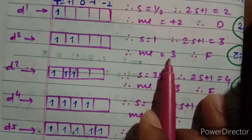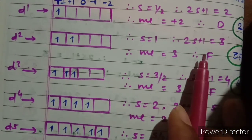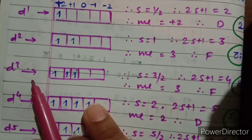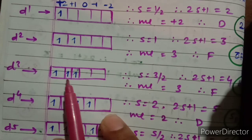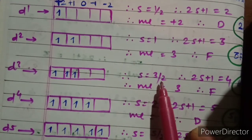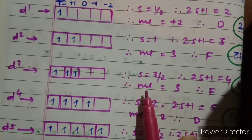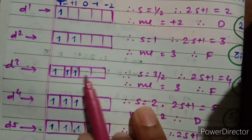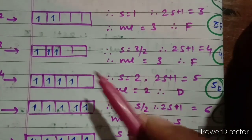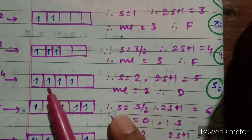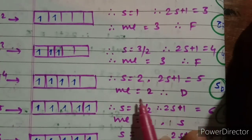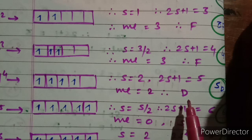For d2, S = 1, 2S+1 = 3, ml sum = 3 giving term F — so the term symbol is ³F. For d3, three electrons are arranged per Hund's rule; S = 3/2, 2S+1 = 4, ml = +2+1+0 = 3 giving F — so the term symbol is ⁴F. For d4, S = 2, 2S+1 = 5, ml = 2 giving term D — so the term symbol is ⁵D.